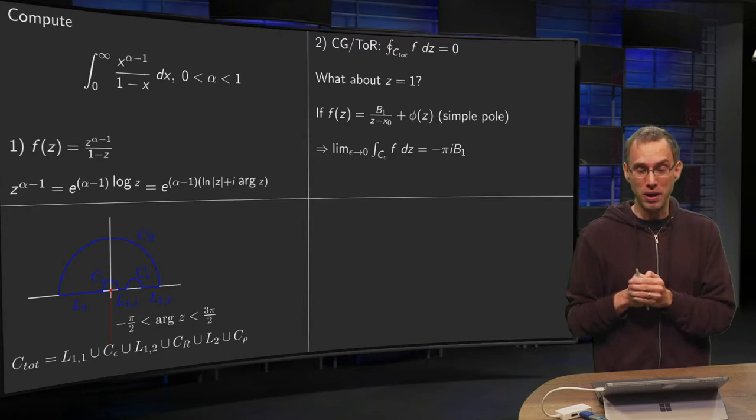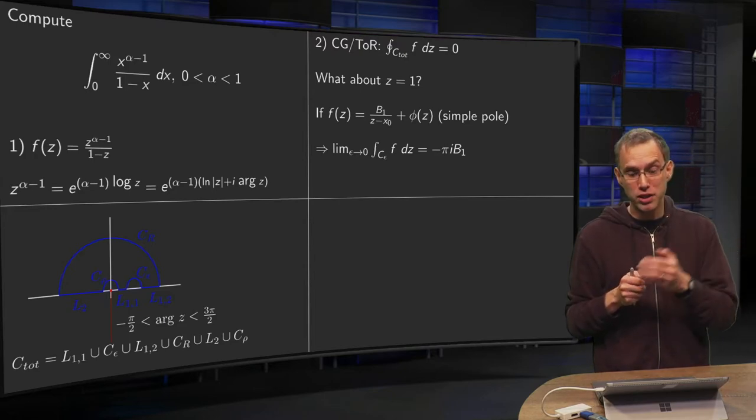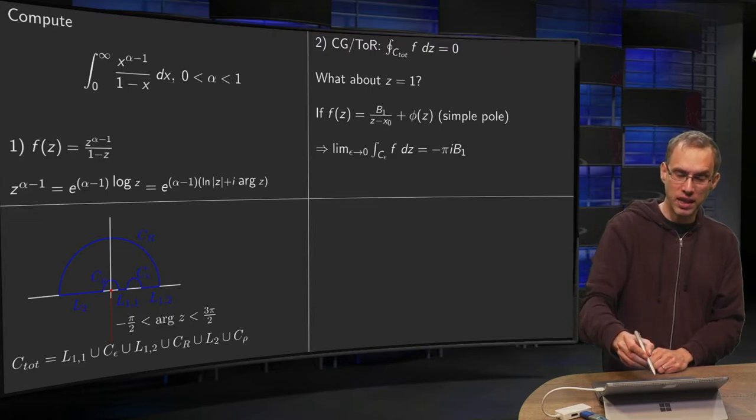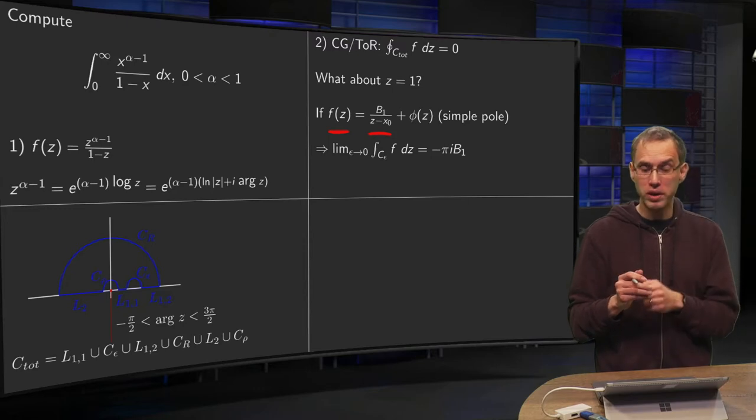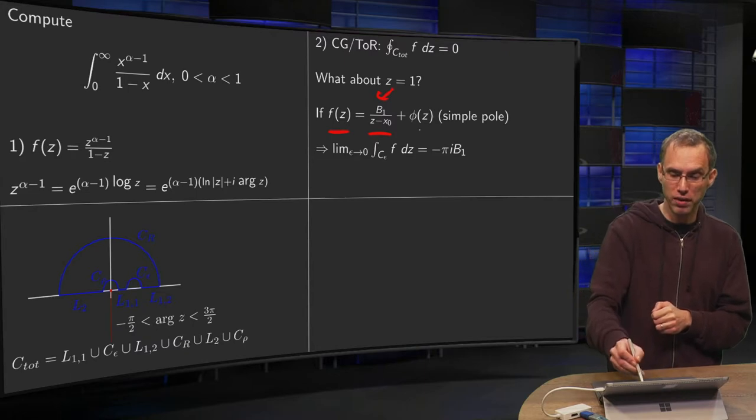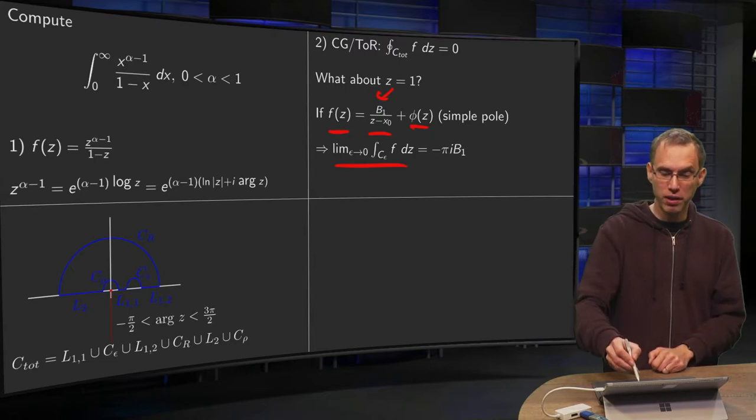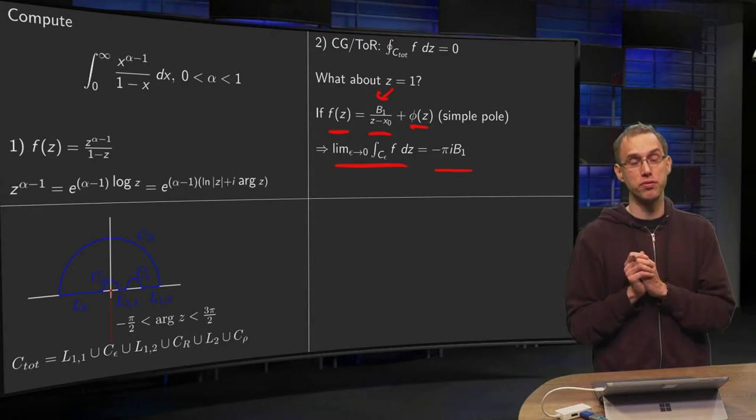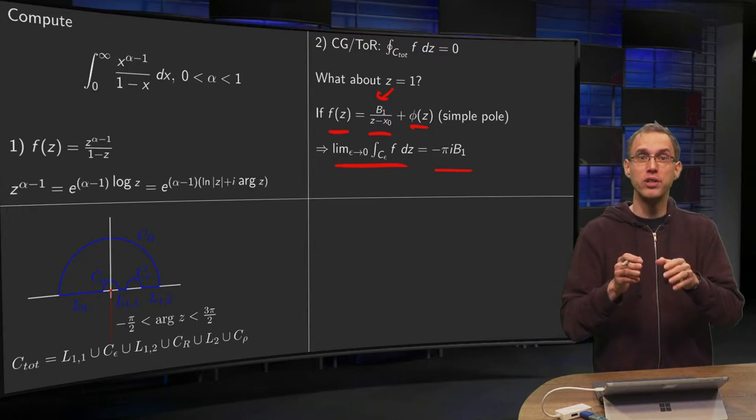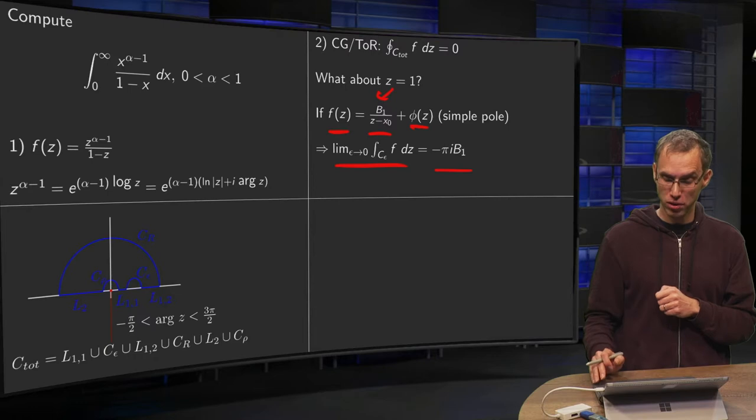But what about z equals 1? It's a singularity on the axis and we are going around it with a semicircle. However, it's a pole of order 1 and we have a theorem about that. If f of z has a pole of order 1 on the axis, it's the ratio of b1 over here. So this phi of z is analytic, simple pole. Then limit epsilon to 0, this integral along the semicircle equals minus pi i times b1. Only holds for a simple pole, but fortunately here we do have a simple pole. So that's how we are able to calculate the integral along c epsilon. And that's going to give us a contribution.